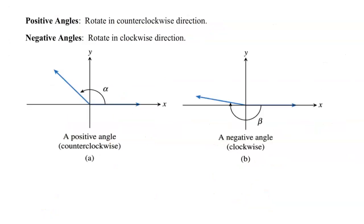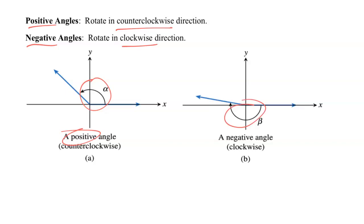Positive angles rotate in the counterclockwise direction — they still start on the positive x-axis and rotate counterclockwise. Negative angles rotate in the clockwise direction — same initial positive x-axis, but the arrow indicates clockwise rotation, which means the angle is negative.